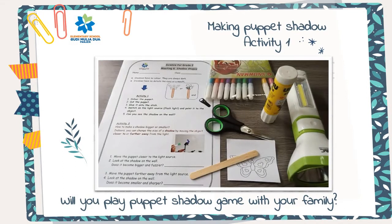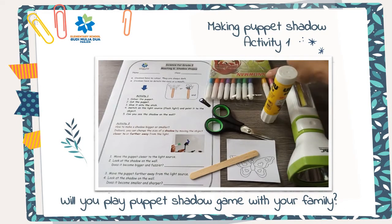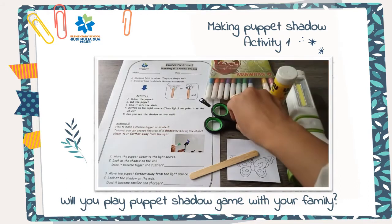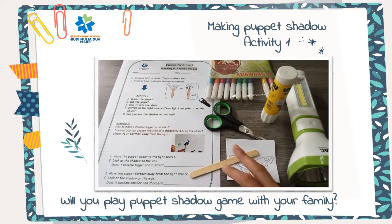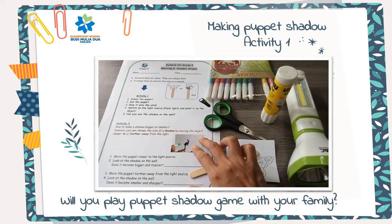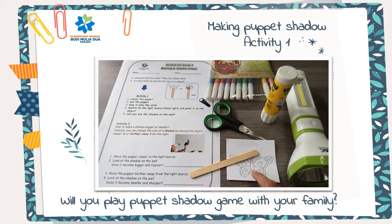Activity 1. Prepare a flashlight, marker, glue, scissor, puppet set, and of course your worksheet. First, color the puppet with your marker.